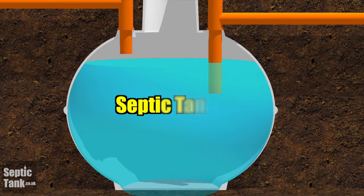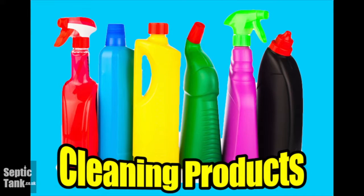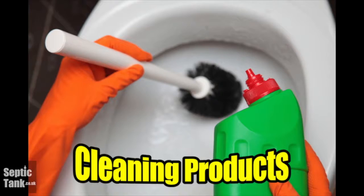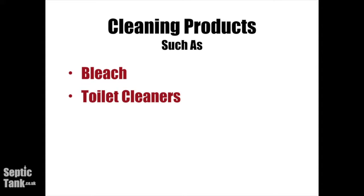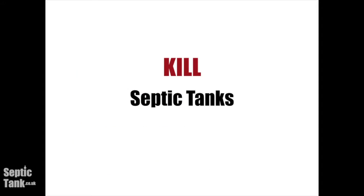So why do septic tanks develop problems? Well, septic tanks have a common enemy: cleaning products. Cleaning products such as bleach, toilet cleaners, washing powder, dishwasher tablets, soap and shampoo — they kill septic tanks.